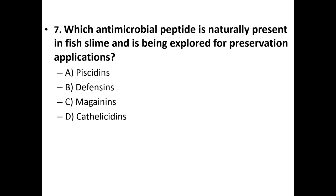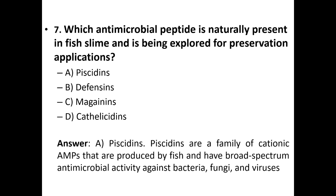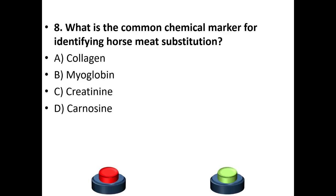Options: piscidins, defensins, magainins, cathelicidins. The answer is option A — piscidins. Piscidins are a family of cationic antimicrobial peptides produced by fish and have broad-spectrum antimicrobial activity against bacteria, fungi, and viruses.